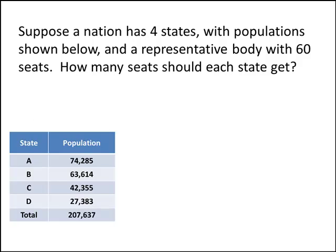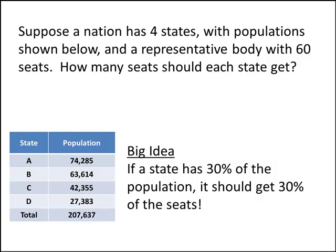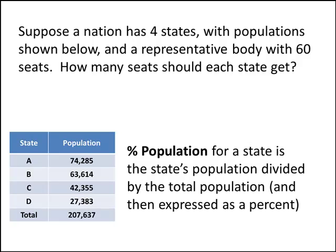Here's an example. Let's say we have a nation with 4 states with the populations listed here, and let's say that this nation has a representative body that has 60 seats. How many seats should each state get? The big idea is that if a state has 30% of the population, then it should get 30% of the seats. So first we should figure out the percentage population that each state has. We do that by taking the state's population and dividing it by the total population, then expressing the answer as a percentage.